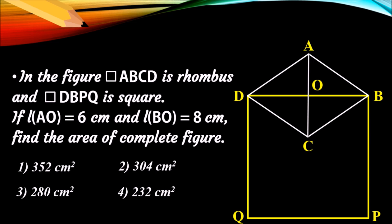Quadrilateral DBPQ is a square. If the length of segment AO is equal to 6 centimeter and length of BO is 8 centimeter, find the area of the complete figure. In scholarship exams, each question has four options. Here also four options are given: 352, 304, 280, and 232 centimeter square.